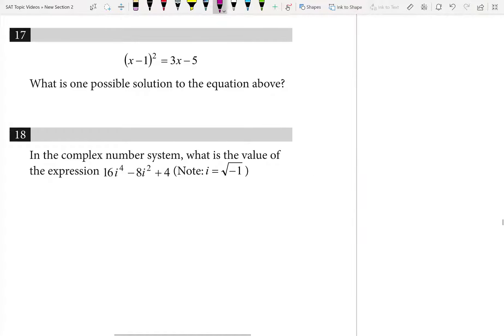On number 17, you may be tempted to try and square root both sides, but you can't really square root 3x minus 5. So what we're going to do instead is I'm just going to foil this out and then take it from there.